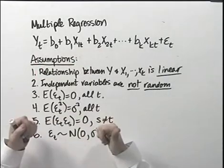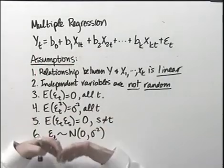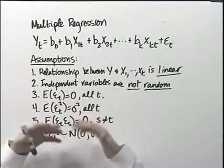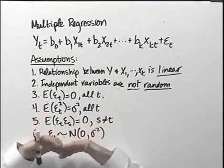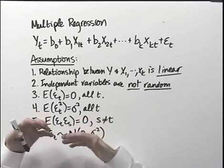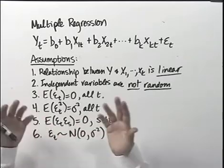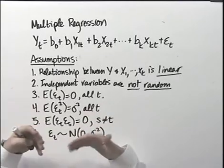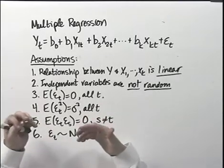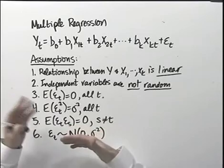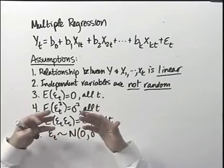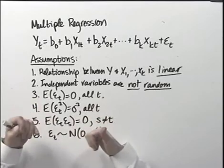Multiple regression is the equation of a multidimensional line, or a line through n-dimensional space. If it helps, think about the three-variable case where you have a line in three dimensions. It's a multidimensional line, so we're looking at the linear relationship between a dependent variable and independent variables that we think explain the variation in the dependent variable.